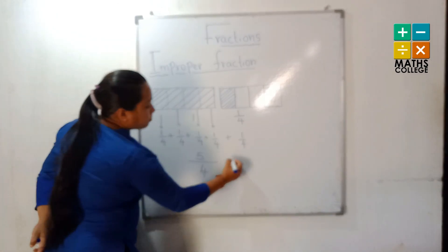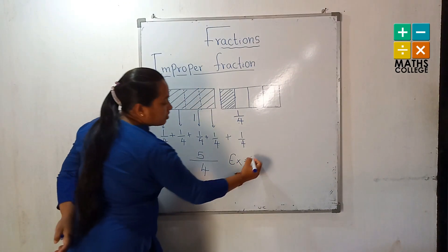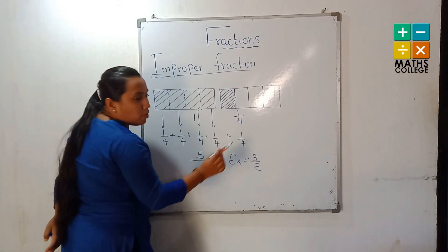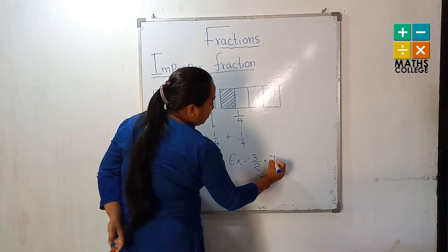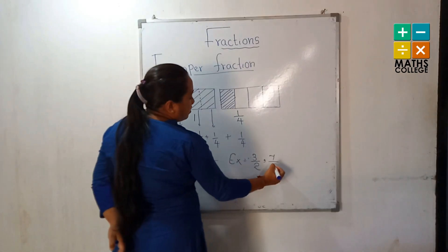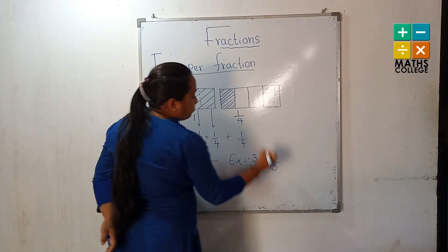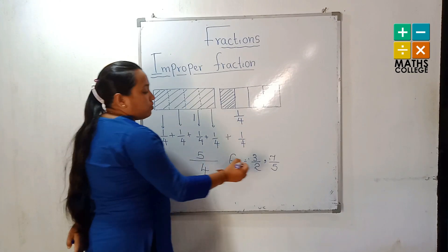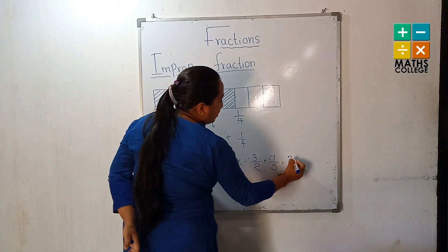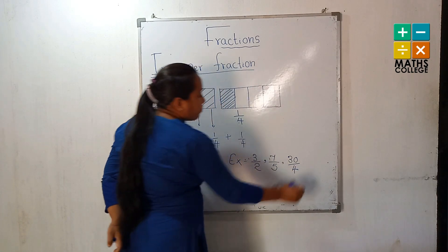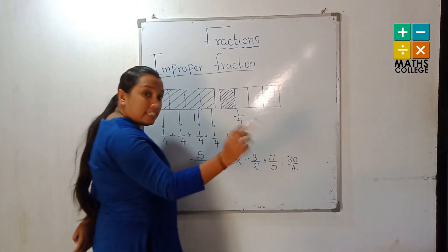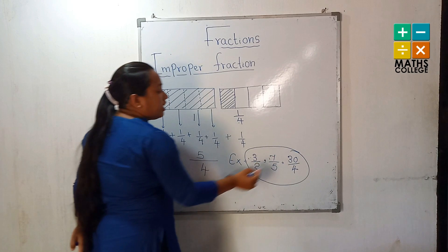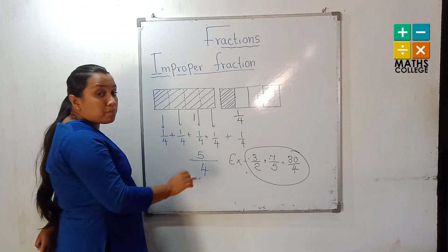Let's look at more examples of improper fractions. Three upon two — the numerator 3 is greater than the denominator 2. Another example: 7 upon 5 — seven is greater than five, so the numerator is greater than the denominator. Another example: 30 upon 4 — thirty is the numerator and it is greater than the denominator. We call that fraction an improper fraction.